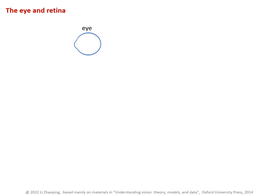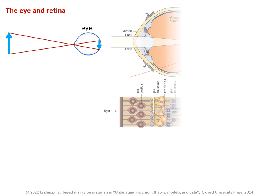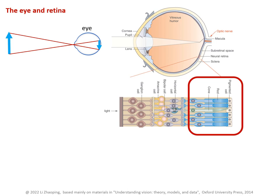Retina part one. In front of this eye, an object forms an image on the retina. Zooming in, the image is sampled by the photoreceptors.